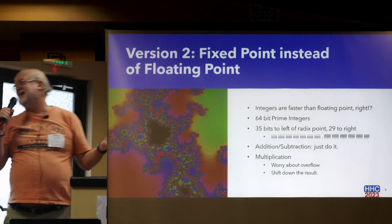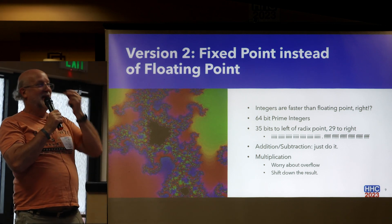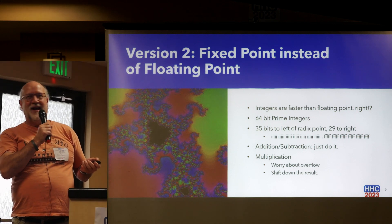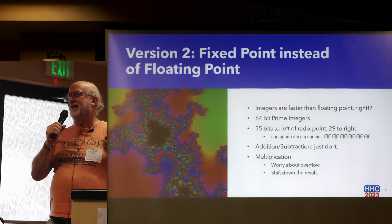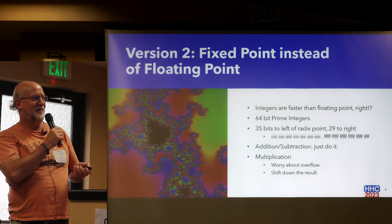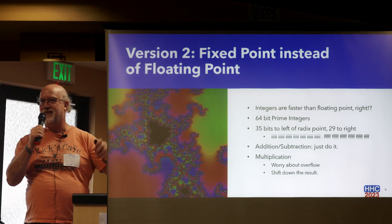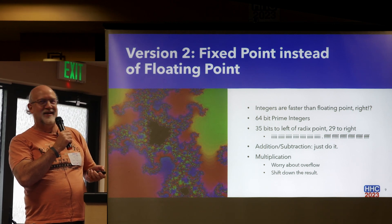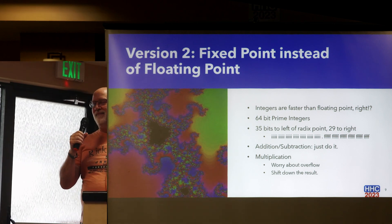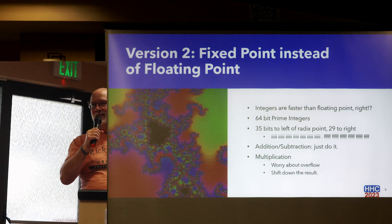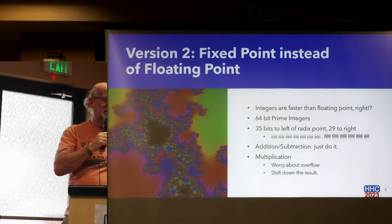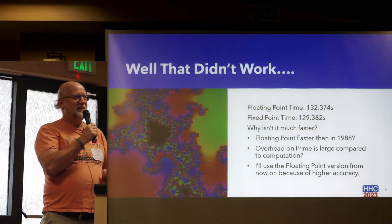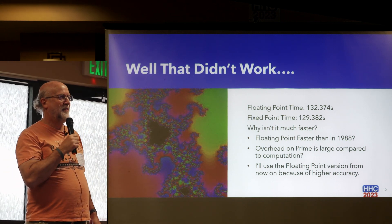It's kind of slow, and back in 1988 that would take all night to run. So the first thing I did was use integers instead of floating point, because integer math is faster. With 64-bit prime integers, I put 35 bits to the left of the radix point and 29 to the right — fixed-point arithmetic. Addition and subtraction you just do; multiplication you have to worry about overflow and adjust the result. The floating point time was 1.32 seconds; the fixed point time was 1.29. Practically no difference at all.